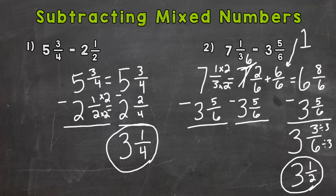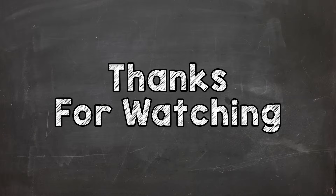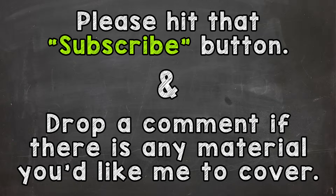So there you have it — that's how you subtract mixed numbers. Rewrite the problem vertically. See if you need a common denominator, and rename if you do. Then go ahead and subtract the fractional part, then the whole number part. Thanks so much for watching. Until next time.